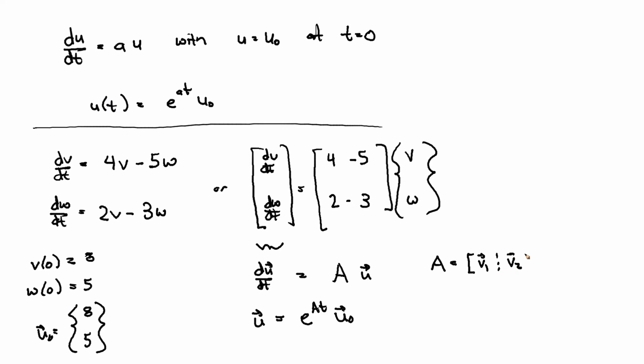[V1, V2], times its eigenvalues [lambda_1, 0; 0, lambda_2], times [V1, V2] inverse.